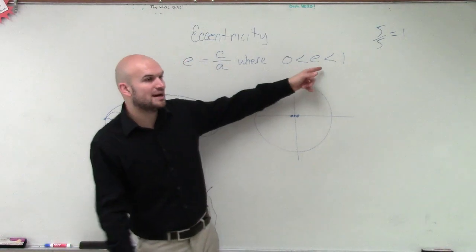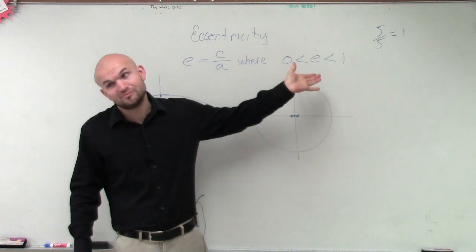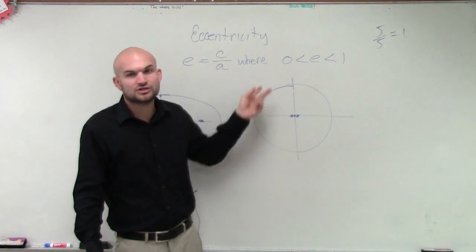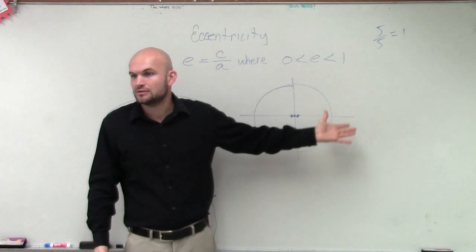So my values, my eccentricity cannot be 0, but it can be very, very close. And obviously, the closer and closer it is to 0, the more and more the shape becomes a circle.